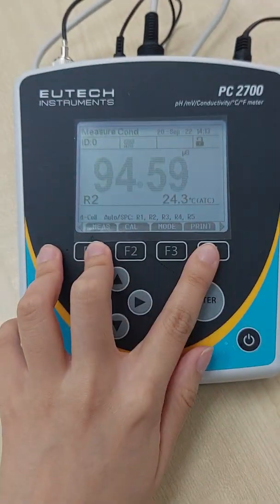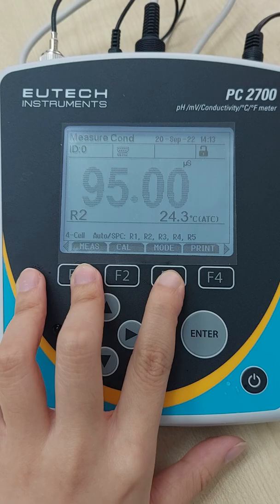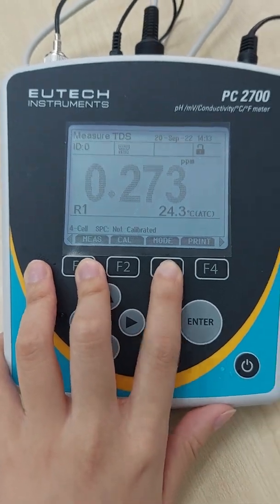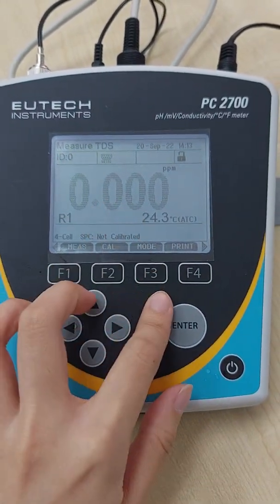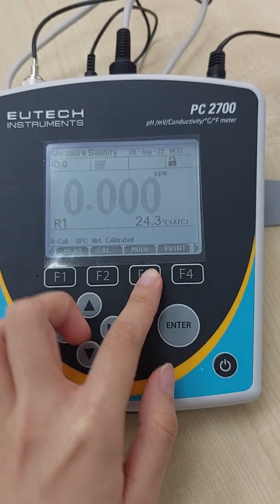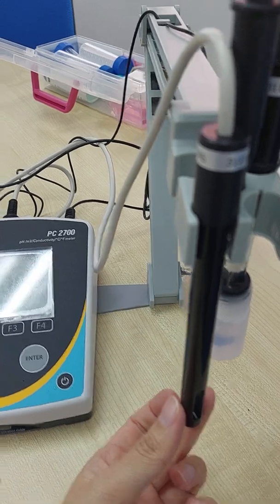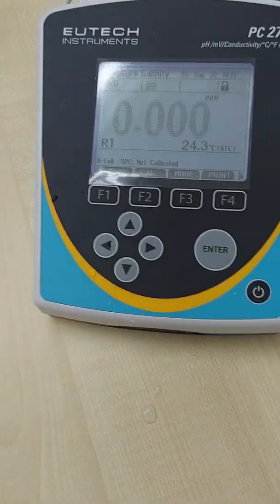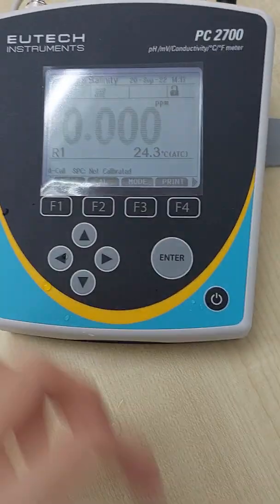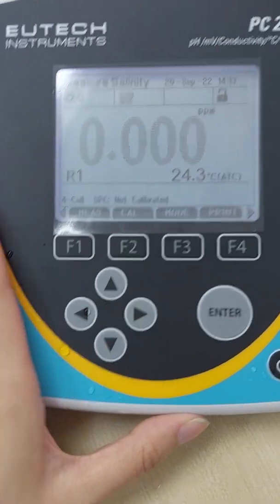Conductivity. Just now we did the calibration ready. So conductivity, TDS, and also salinity, they use the same probe, this black color one. Just that you need to get a separate calibration solution for salinity and also TDS as well.